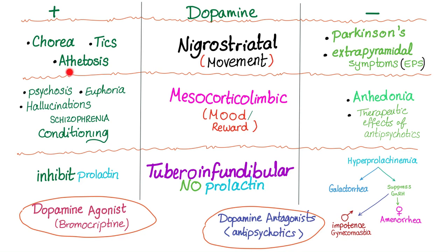Any extreme is treated by the other extreme. For instance, if you have psychosis due to excess dopamine, we give you antipsychotics to decrease the dopamine. If you are having increased prolactin because there is no dopamine, we give you dopamine agonists such as bromocriptine to inhibit prolactin and help with hyperprolactinemia symptoms. Please let me know in the comments if you'd like a specific video created.